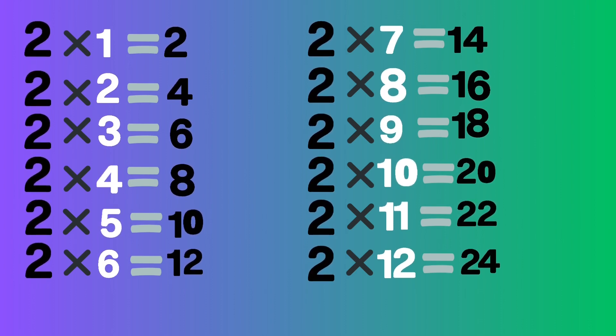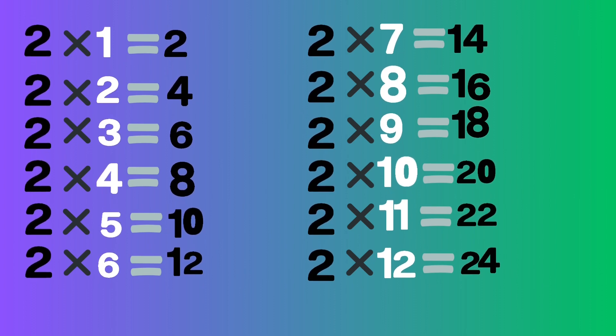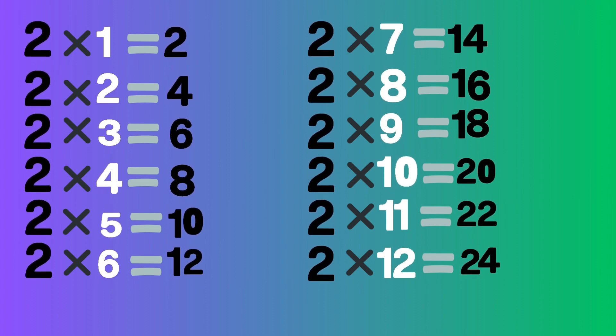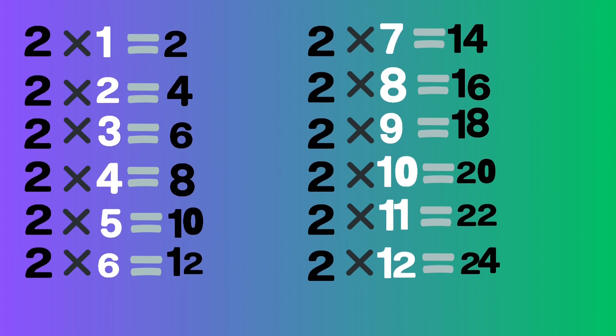Two nines are eighteen, two tens are twenty, two elevens are twenty-two, two twelves are twenty-four.